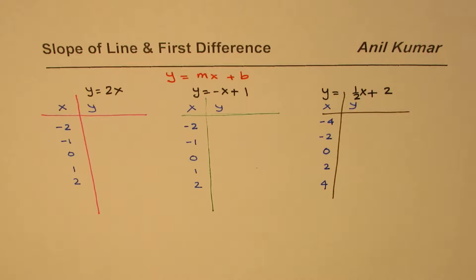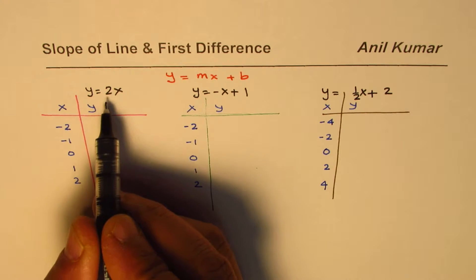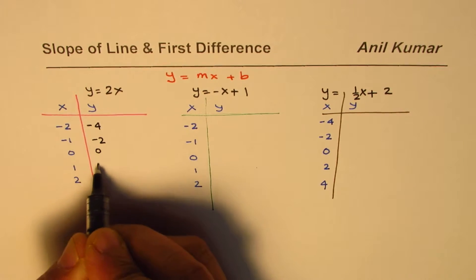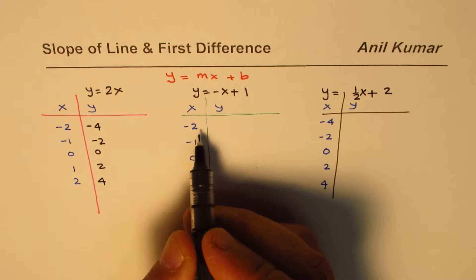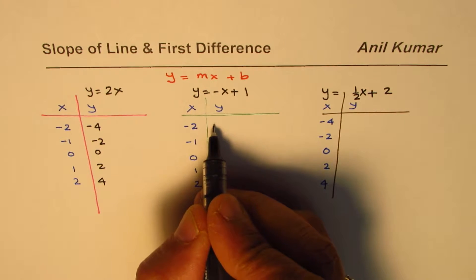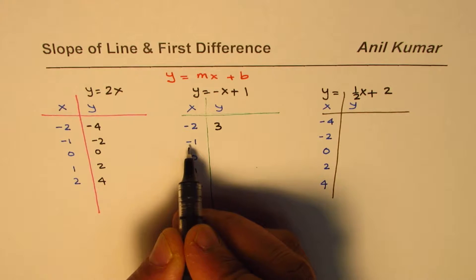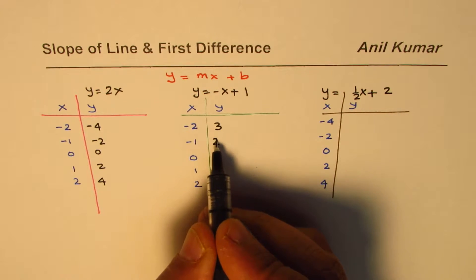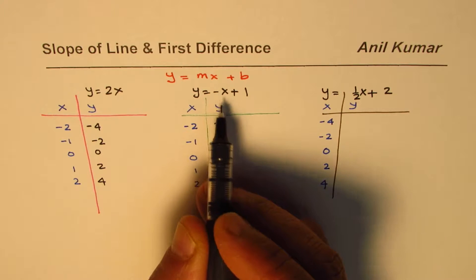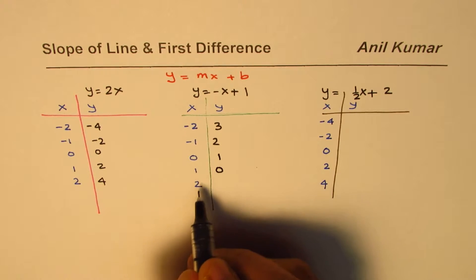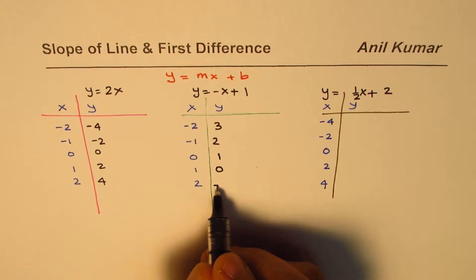Now let's calculate the y values. For y = 2x, the y values are twice the input: -4, -2, 0, 2, and 4. For y = -x + 1: negative of -2 is +2, plus 1 is 3; negative of -1 is +1, plus 1 is 2. You'll find this is decreasing by 1 since the slope is -1.